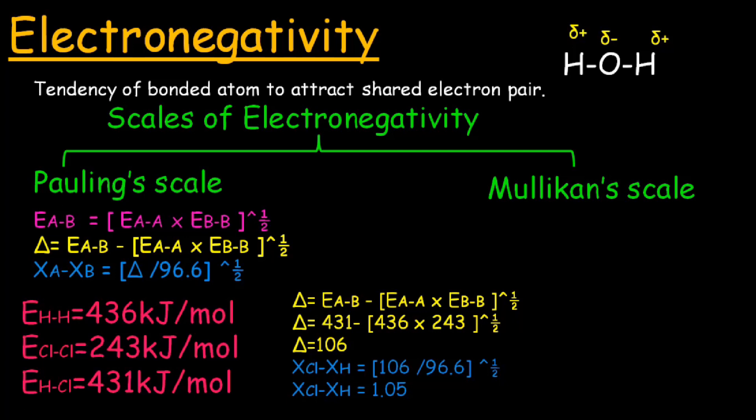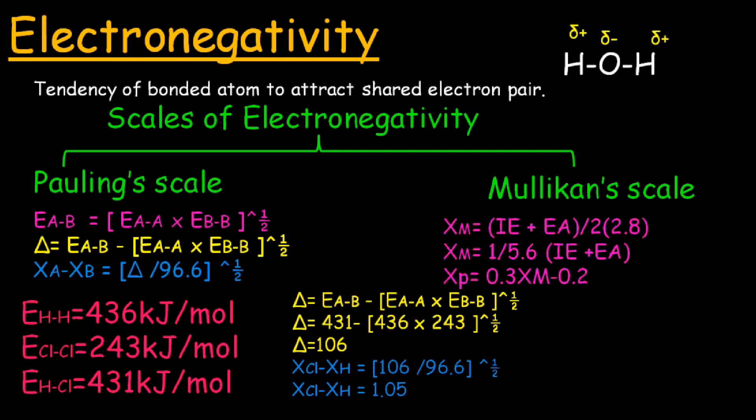Mulliken also devised a scale based upon the values of ionization energies and electron affinity. He says that you can find the electronegativity of an atom if you know the ionization energy and electron affinity values for the first electron — divide by 2 and multiply the whole by 1 over 2.8.